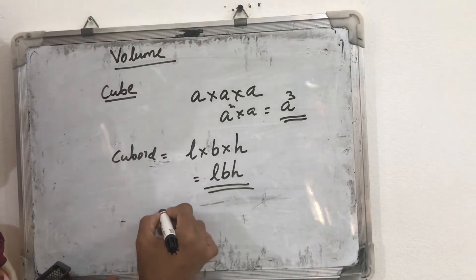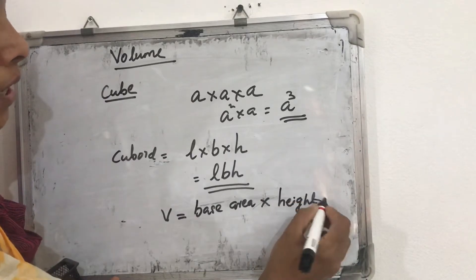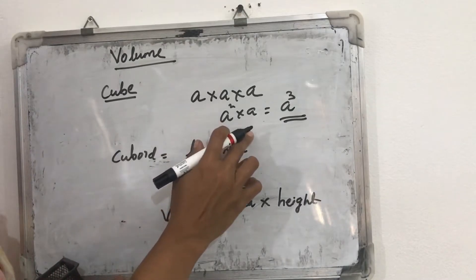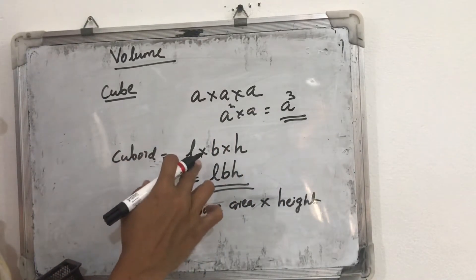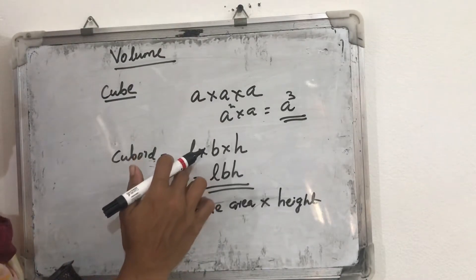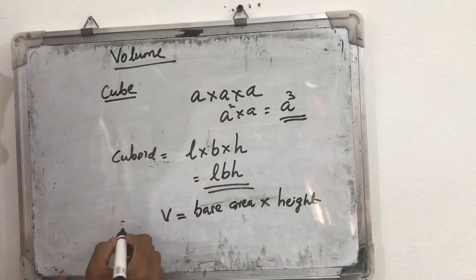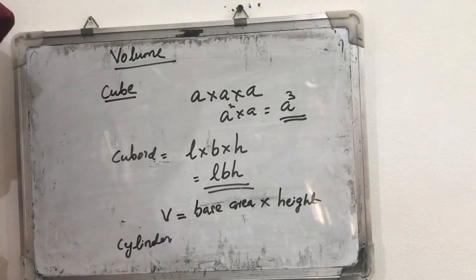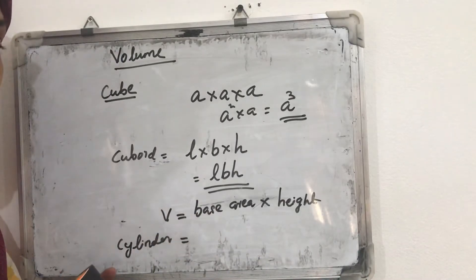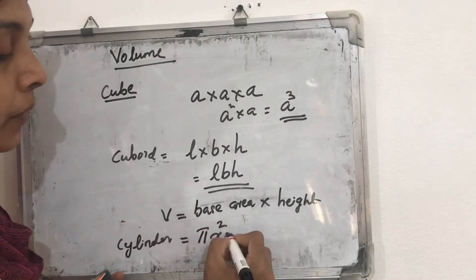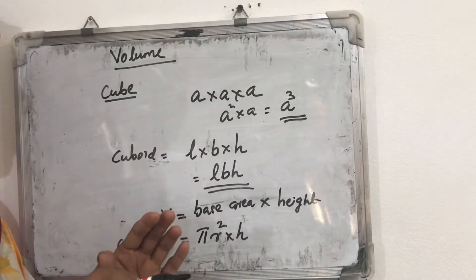So volume = base area × height. For a cube, base area = a², and height = a, so volume = a² × a = a³. For a cuboid, the base is rectangular, so base area = length × breadth = lb, and multiplying by height gives lbh. For a cylinder, the base is a circle, so base area = πr², and multiplying by height h gives volume = πr²h.